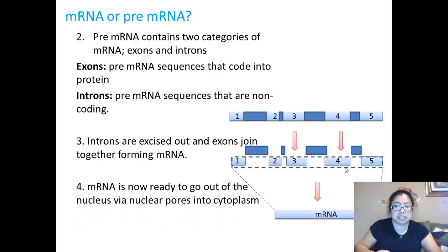The mRNA is now ready to go out of the nucleus via the nuclear pores into the cytoplasm. And then the mRNA will attach to rRNA, ribosomal RNA, to start translation.